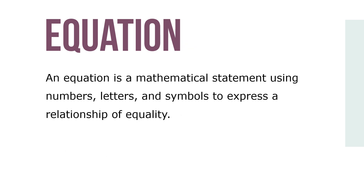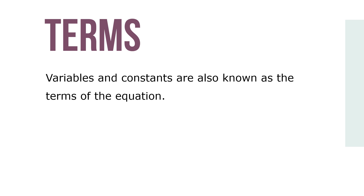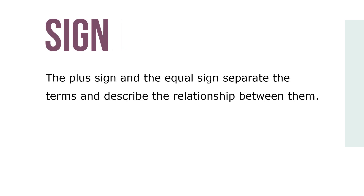An equation is a mathematical statement using numbers, letters, and symbols to express a relationship of equity. Equations have an expression on the left side and an expression on the right side connected by an equal sign. Letters of the alphabet are used to represent unknown quantities in equations and are called variables. In the equation S plus 12 equals 20, S is the variable or the unknown. The 12 and the 20 are constants or knowns. Variables and constants are also known as terms of the equation. The plus sign and the equal sign separate the terms and describe the relationship between them.